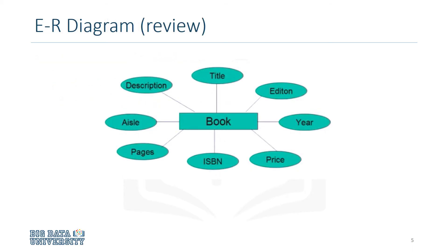An entity relationship diagram, or ER diagram, for the entity book would look like this. The entity book is drawn as a rectangle, and the attributes are drawn as ovals. Attributes are certain properties of that entity — for example, title, edition, year, price, etc.